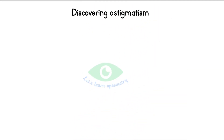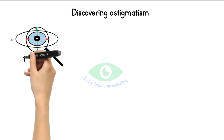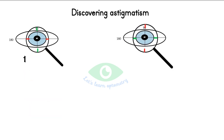Discovering astigmatism: If no astigmatism was found during retinoscopy or autorefraction but you suspect some, you can find it with JCC. Hold the handle so that the axis markings are positioned at 90, 180, 45, and 135 degrees. In position 1, the minus axis is placed horizontally and plus vertically. In position 2, the minus axis is placed vertically and plus horizontally. Ask the patient their preference. If the patient says position 1 is clearer — where the minus axis is at 180 degrees — note this axis.